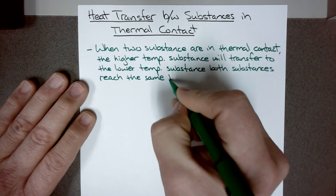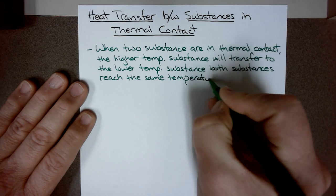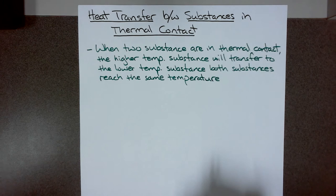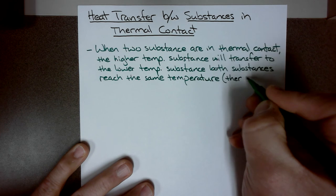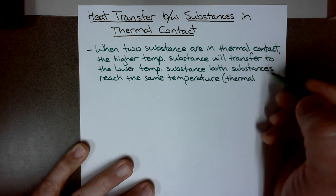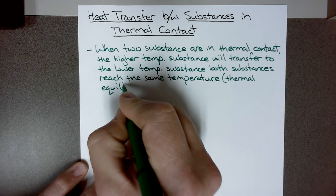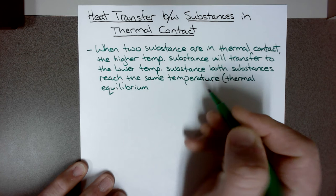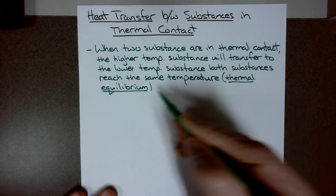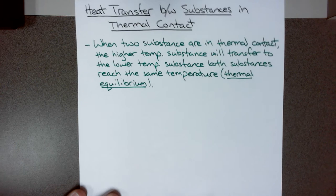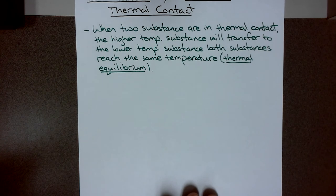If I take a piece of metal that's really hot and place it in some water that's cooler, the hot metal will transfer some heat to the water. As it does that, the metal cools down and the water warms up, and they both reach a point where they have the same temperature, which we call thermal equilibrium. The one with the higher specific heat will change temperature less than the one with the lower specific heat.